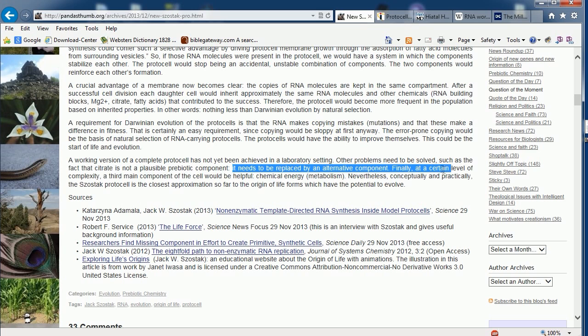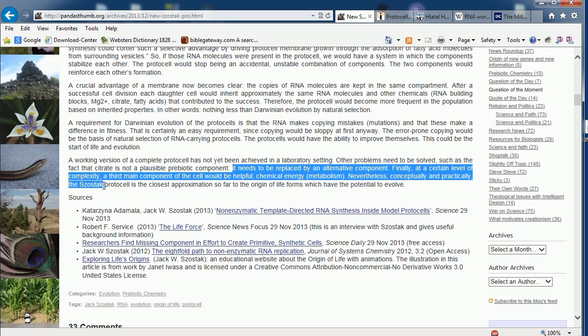So they say it needs to be replaced by an alternate component. Finally, at a certain level of complexity, a third main component of the cell would be helpful. Chemical energy metabolism. Nevertheless, conceptually and practically, the Szostak protocell is the closest approximation so far to the origin of life forms, which have a potential to evolve. Now, again, I'm going to point out that abiogenesis is not supposed to have anything to do at all with evolution, but every article that I go to on the origins of life, it's pointing to evolving.